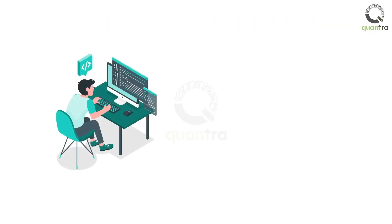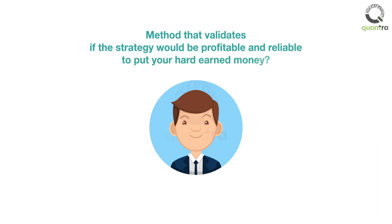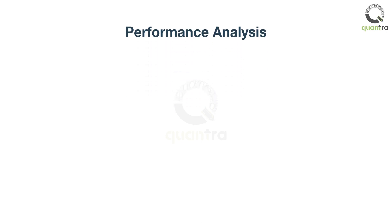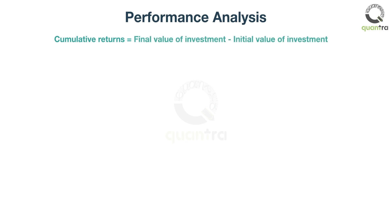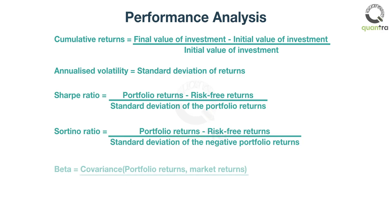You created the pairs trading strategy and are confident it will give you a huge profit. But is there any method that validates the strategy will be profitable and reliable? Yes, mathematical formulas will tell you about the strategy performance. You can find out how the strategy has performed over time using cumulative returns — subtracting the initial value from the final value and dividing by the initial value. You can find how volatile your strategy is by calculating the standard deviation of the cumulative returns. Similarly, performance metrics such as Sharpe Ratio, Sortino Ratio, and Beta can be used to analyze the strategy, all derived from mathematical formulas. Understanding these metrics and how they are calculated will definitely help you evaluate the strategy.